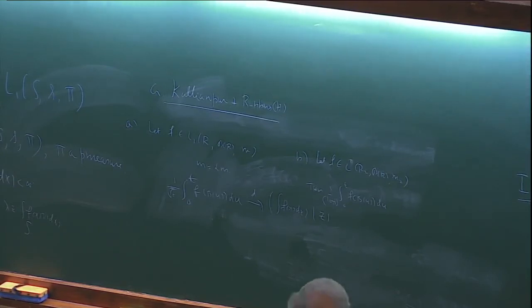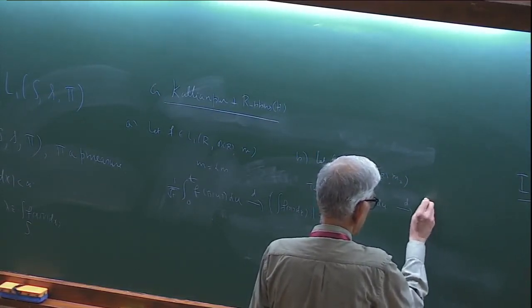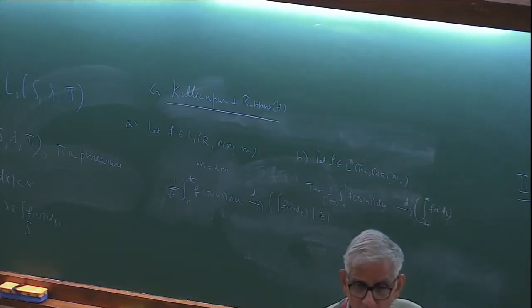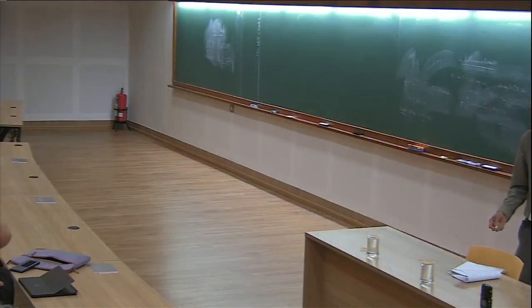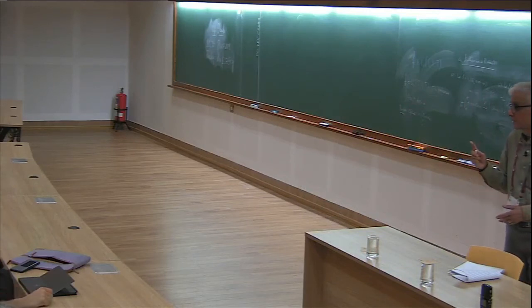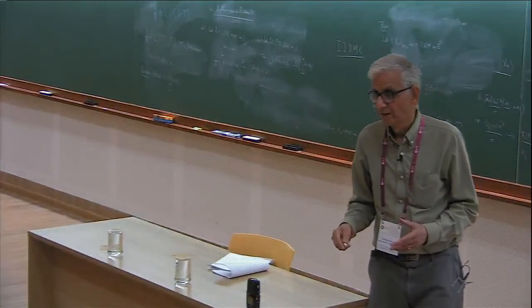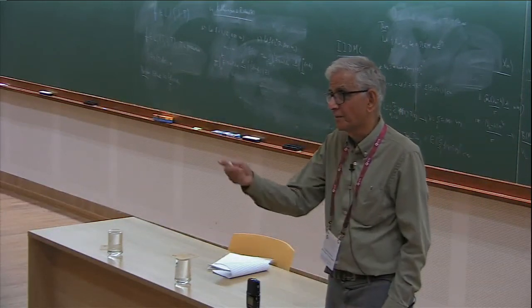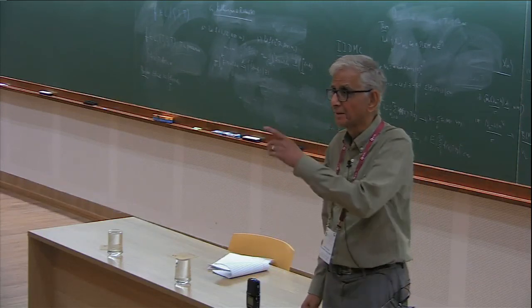It is a beautiful article by Robbins and Kallianpur. For f ∈ L1(R², B(R²), m₂), the same quantity (1/log T)·∫₀ᵀ f(B(u)) du converges in distribution to [∫∫f(x)dx]·Z, where Z is some random variable — find out what it is. So in 2D the decay rate is 1/log T. This result is Kallianpur's thesis result — he went to the US in the 1950s, hovered around Columbia University, Robbins accepted him and gave him this problem, and Kallianpur solved it.